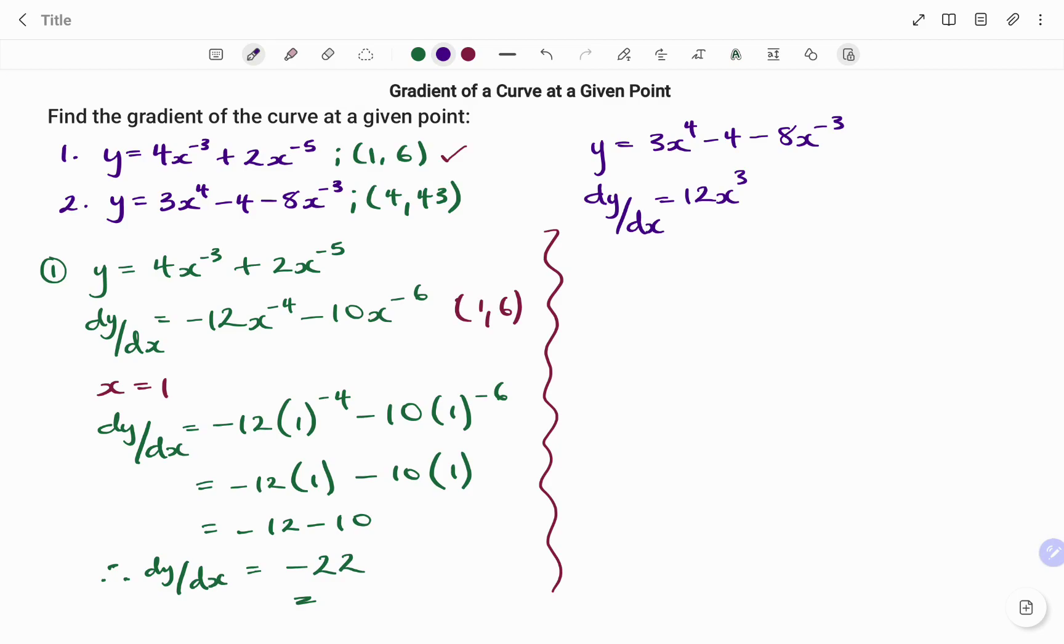Then I have the gradient or the dy/dx of minus 8x to the power of negative 3, that's plus 8 times 3, 24x to the power of minus 3 minus 1, minus 4. Therefore, we have to find the gradient at the point (4,43). Note that at this point, the x value is equal to 4.